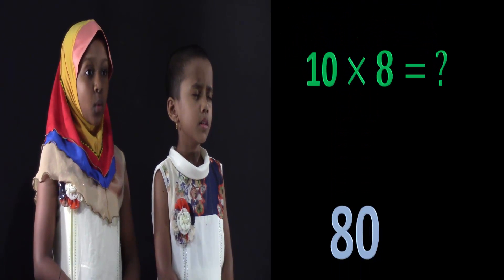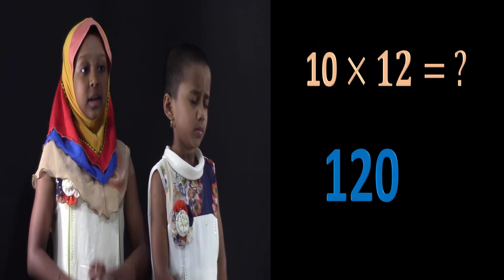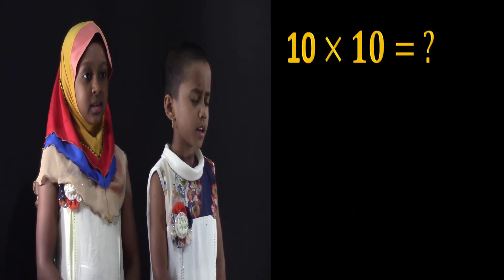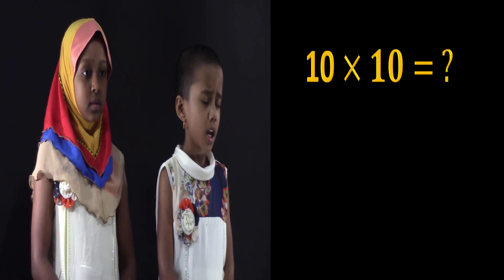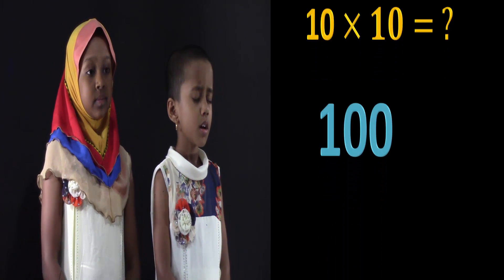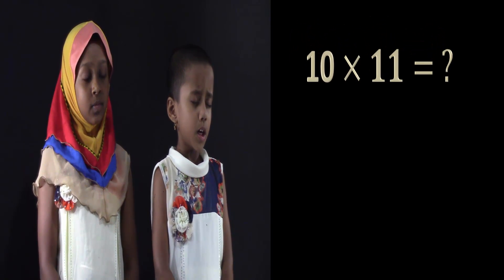What's 10 times 8? 10 times 8 is 80. What's 10 times 12? 10 times 12 is 120. What's 10 times 7? 10 times 7 is 70. What's 10 times 5? 10 times 5 is 50. What's 10 times 10? 10 times 10 is 100. What's 10 times 4? 10 times 4 is 40. What's 10 times 11? 10 times 11 is 110.